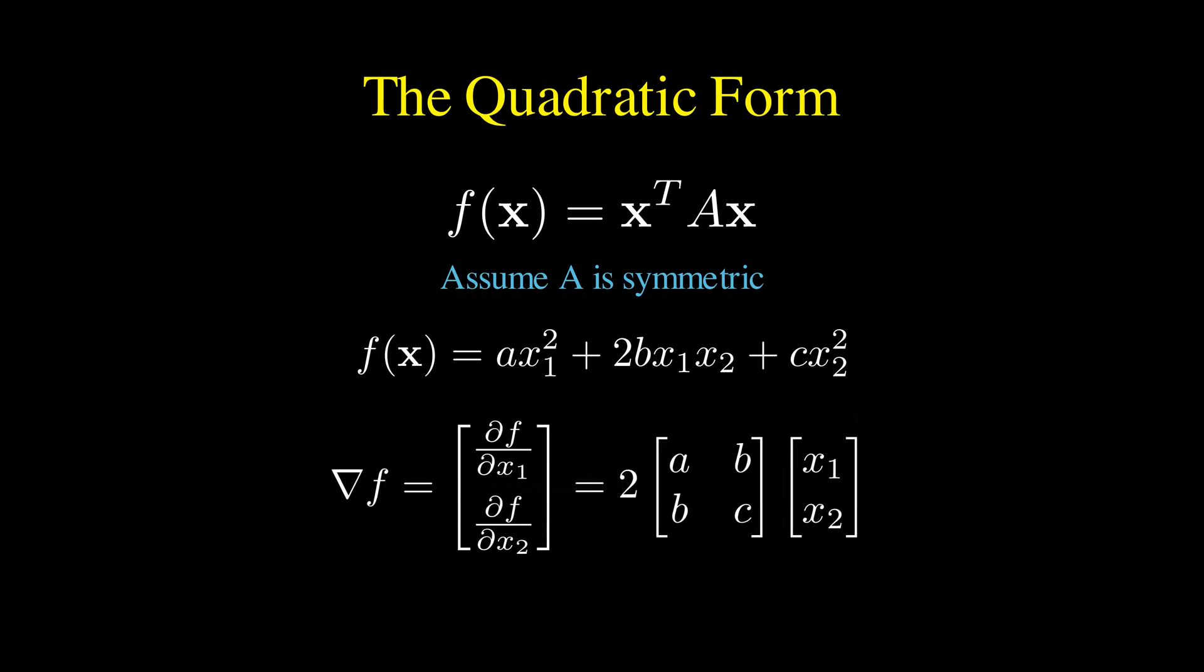Notice that we can factor out a 2, and the remaining terms can be rewritten as the matrix A multiplied by the vector x. This leads us to our second key result. The derivative of the quadratic form x transpose Ax is 2Ax.